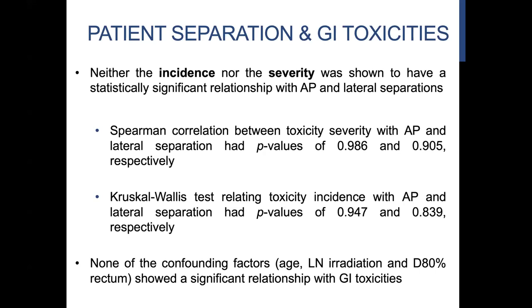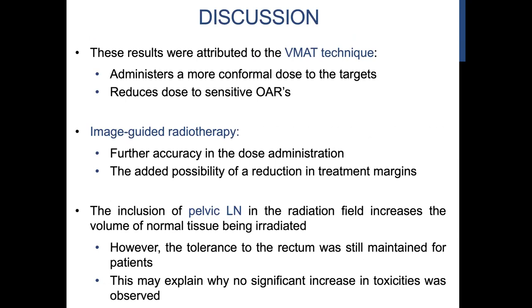The Spearman correlation between toxicity severity and separations had non-significant p-values, and similarly the Kruskal-Wallis test related to toxicity incidence and separation had non-significant p-values. None of the confounding factors — age, lymph nodes, or rectal dosimetry — showed any significant relationship with the gastrointestinal toxicities. These results were mainly attributed to the VMAT technique. VMAT, or Volume Modulated Arc Therapy, is a relatively new technique in radiotherapy which allows for administration of a more conformal dose to the targets, therefore reducing the dose to the sensitive organs at risk — the organs adjacent to the targets which are healthy. Image-guided radiotherapy, specifically cone beam CT, is used locally, and this was also attributed to the results, allowing for further accuracy in dose administration and reduction in treatment margins, limiting dose to sensitive organs at risk.